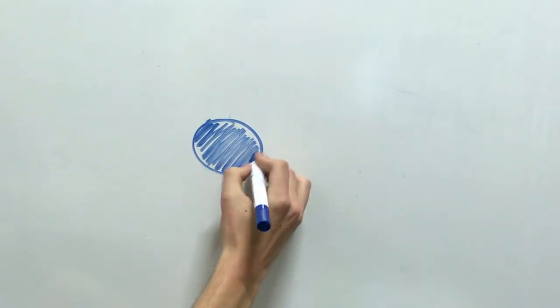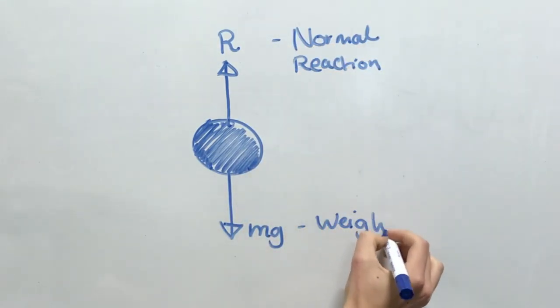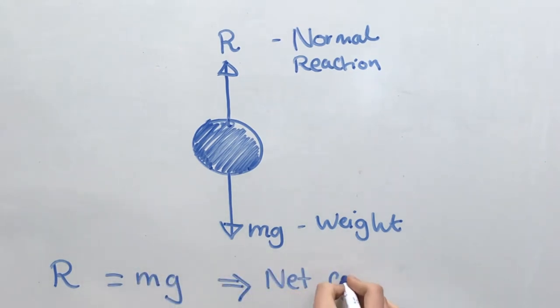So for an object that's in vertical equilibrium, the normal reaction force exactly balances the force due to gravity on the object.